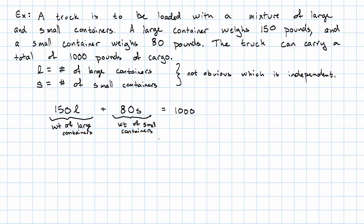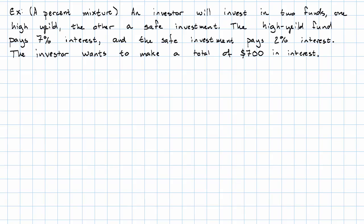One more example. Sometimes we encounter mixtures that involve percents. Suppose an investor wants to invest in two funds, one a high-yield investment, the other a safer investment. The high-yield fund pays 7% interest, and the safe investment pays 2% interest. The investor wants to make a total of $700 in interest.